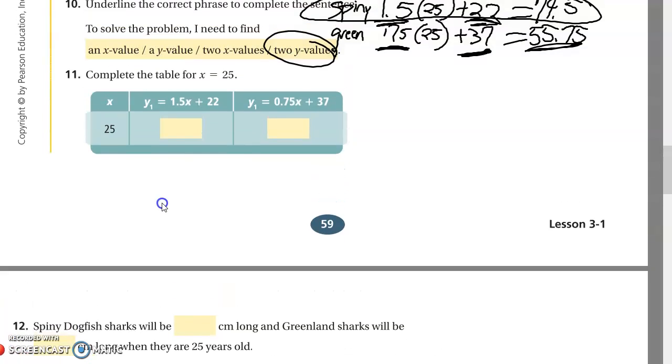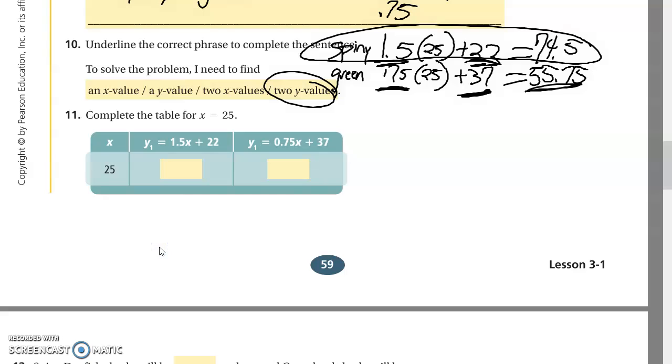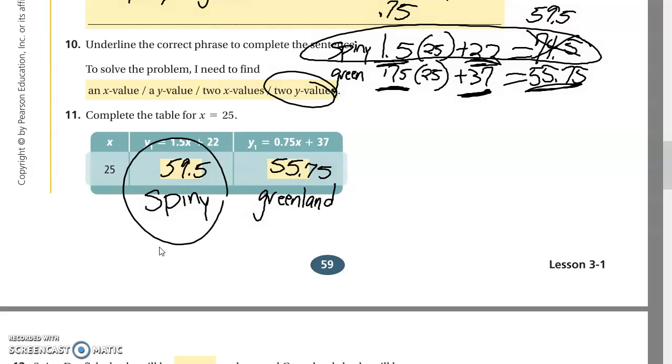What's up class? Just second video here. I want to make a correction up here. I just realized I did the math and it didn't look right. This is not the answer here. It should be 59.5. So I did something wrong in my calculator. So your two answers here for number 11 are 59.5 and the second one is 55.75. So this is the spiny one and this is the Greenland shark. Now you realize which one is longer.